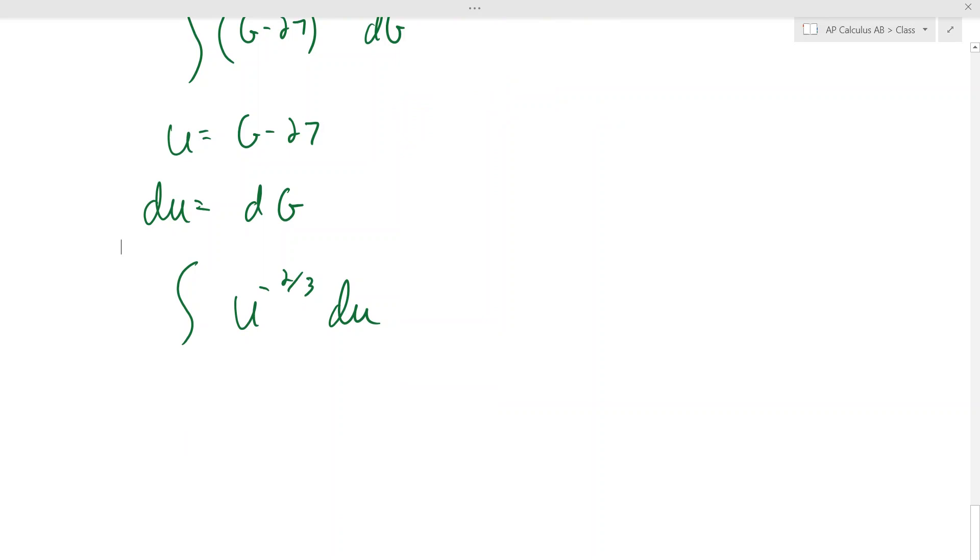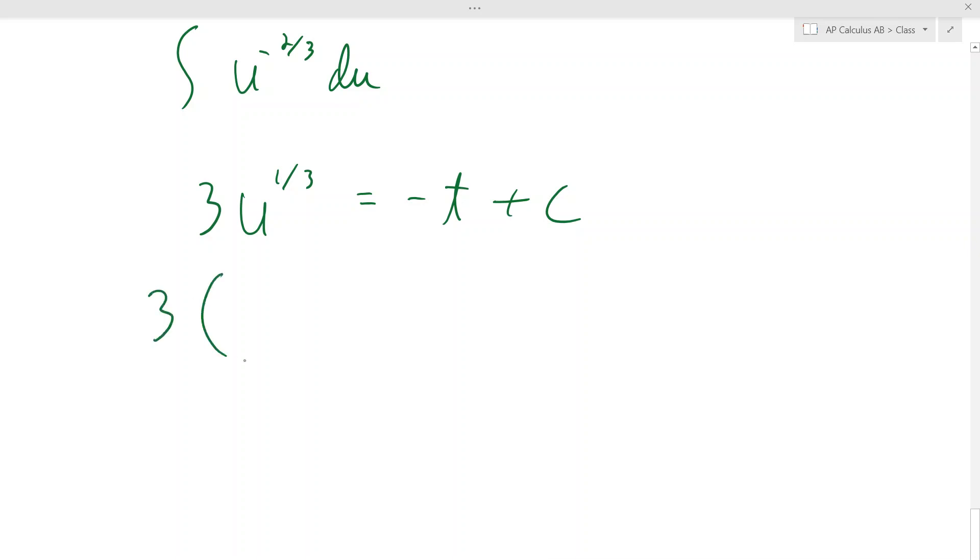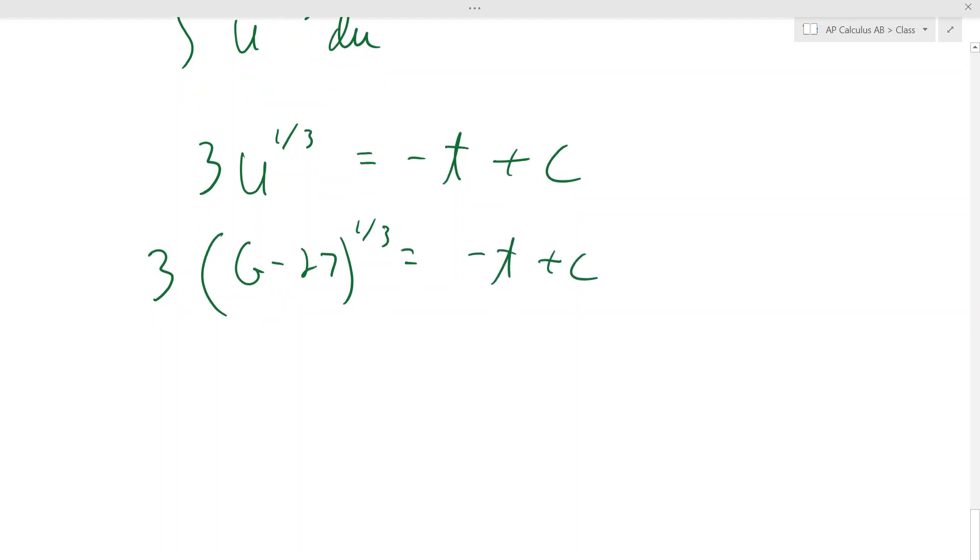So that integral really just becomes the integral of u to the negative two thirds du. And you don't even need to do a u sub anytime du is just d whatever variable is. You can just integrate as if that whole big thing was one variable there. But either way, if you integrate to the negative two thirds, you get to the positive one third times three, and that equals negative t plus C from way up there. So this is three times u is really G minus 27 to the one third and it's still negative t plus C.